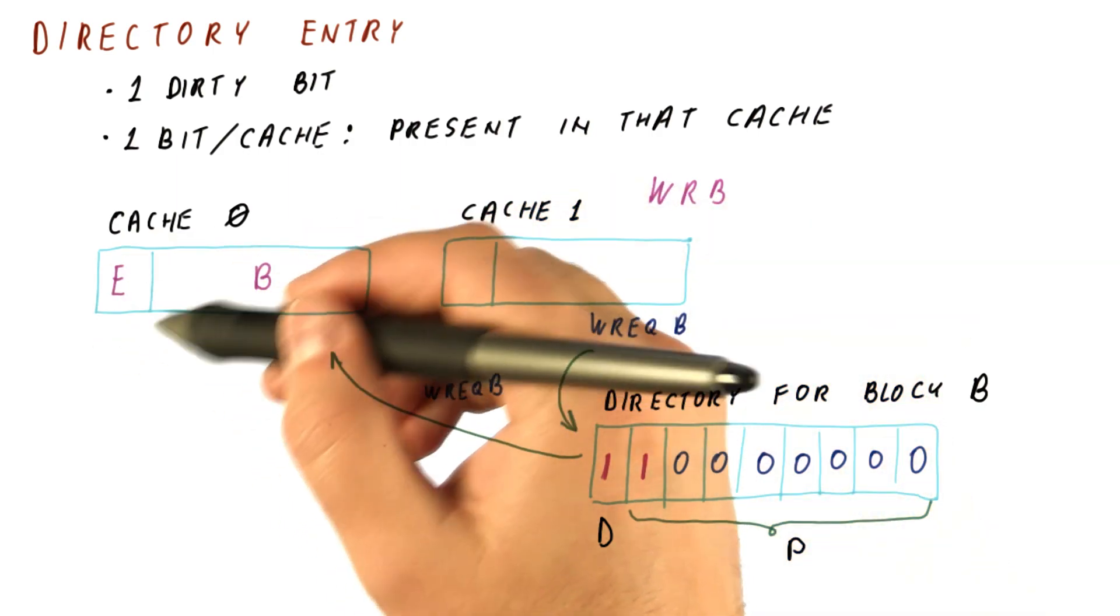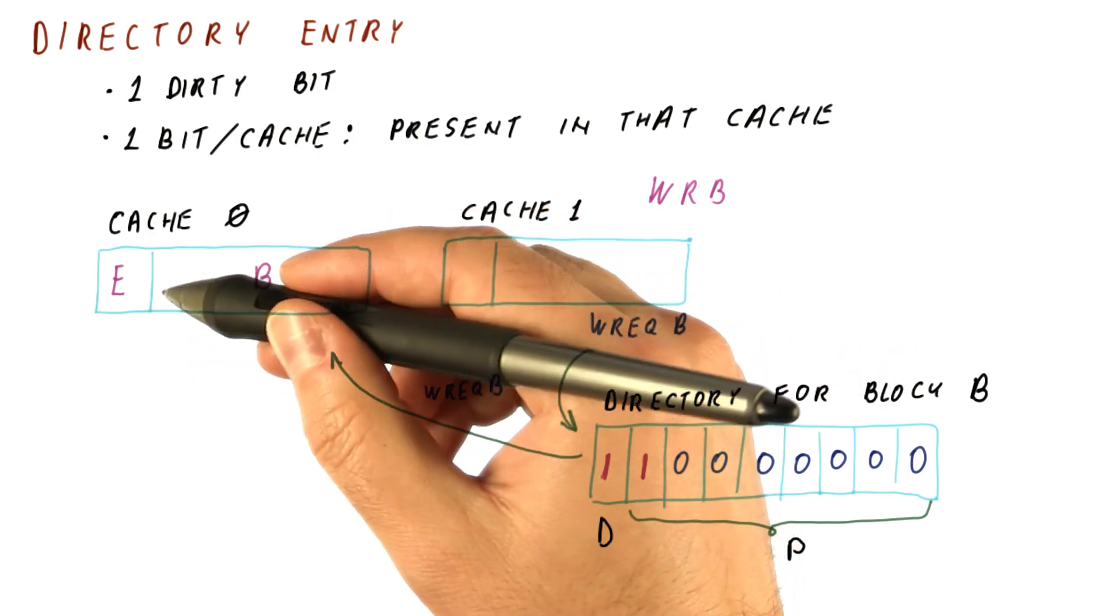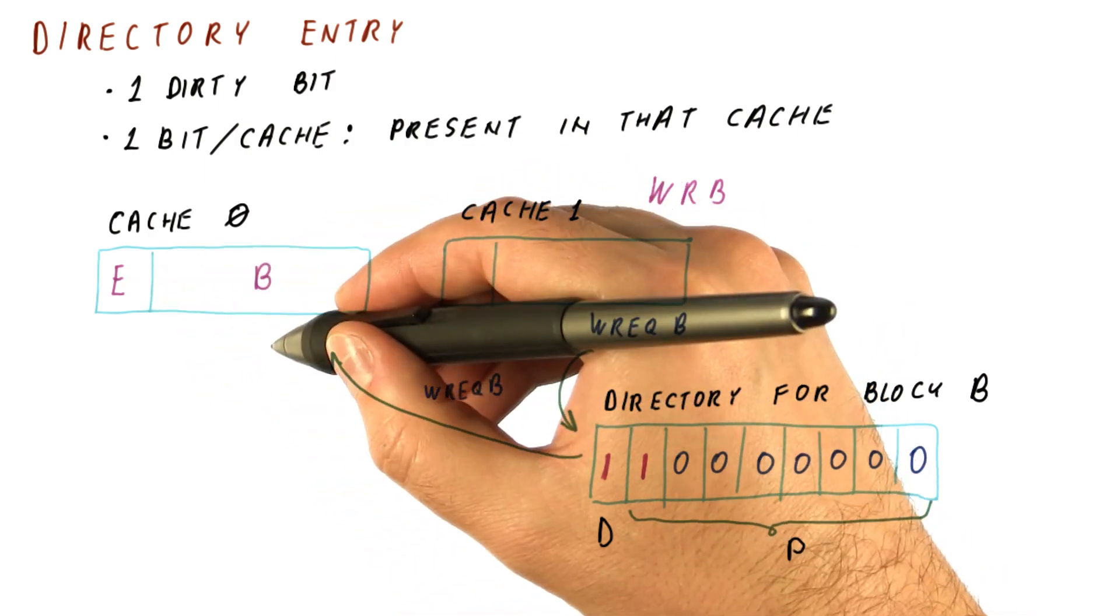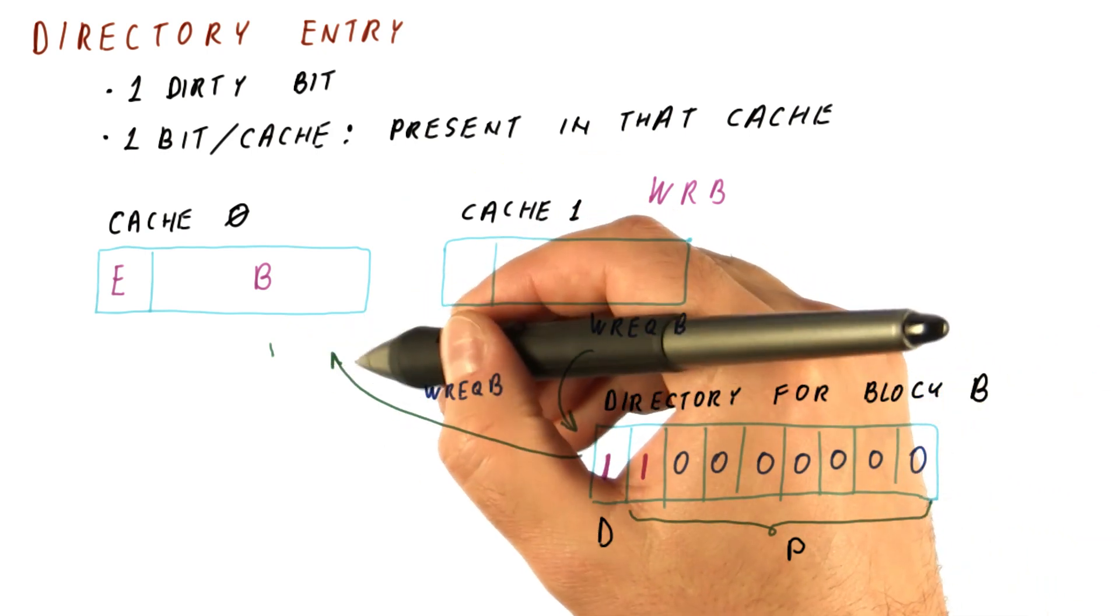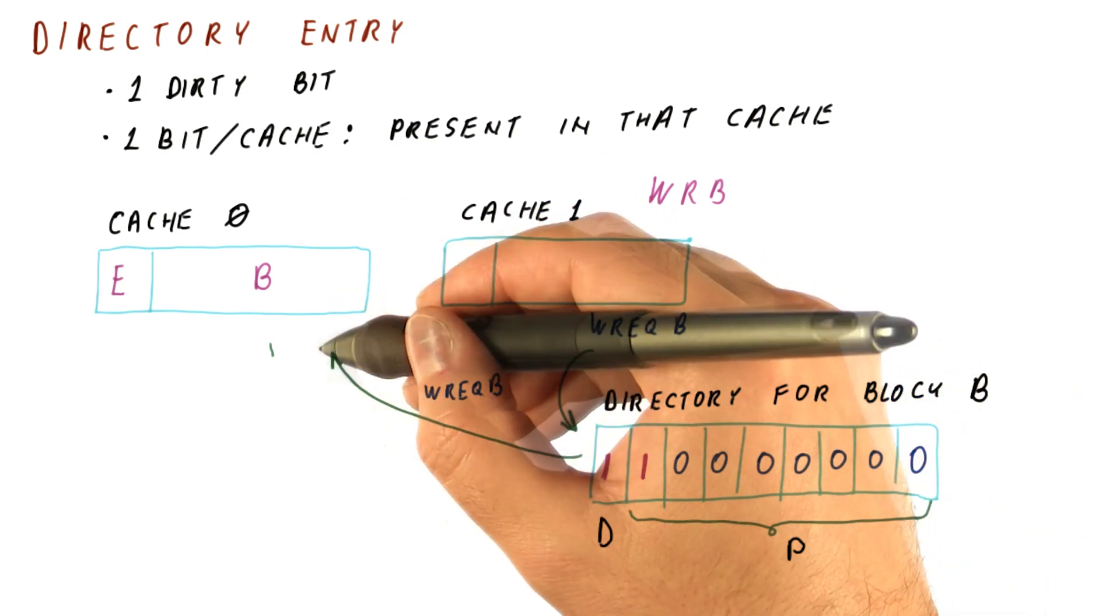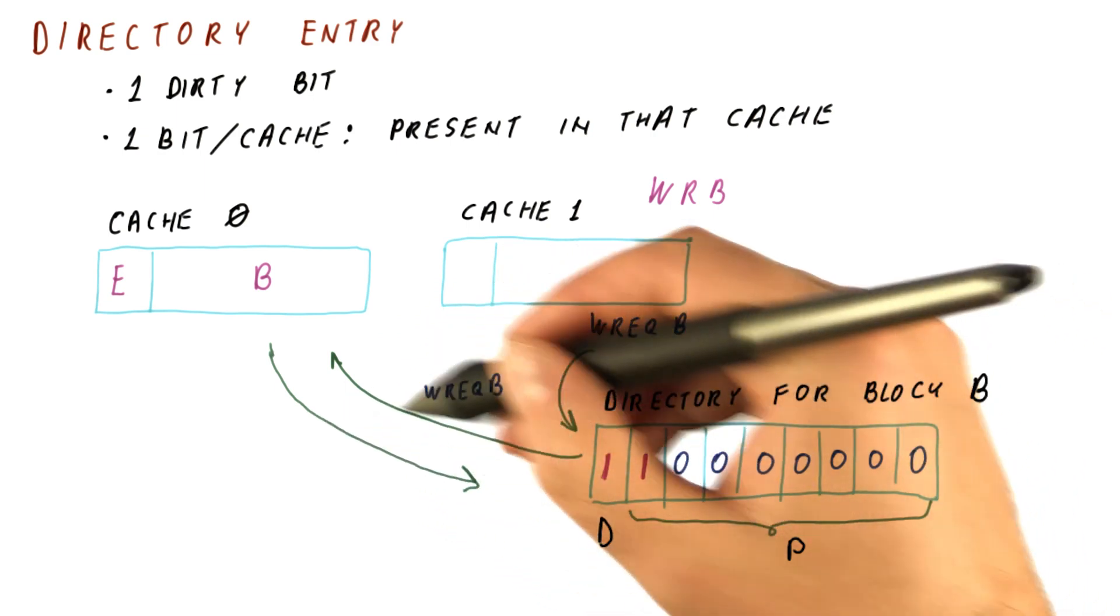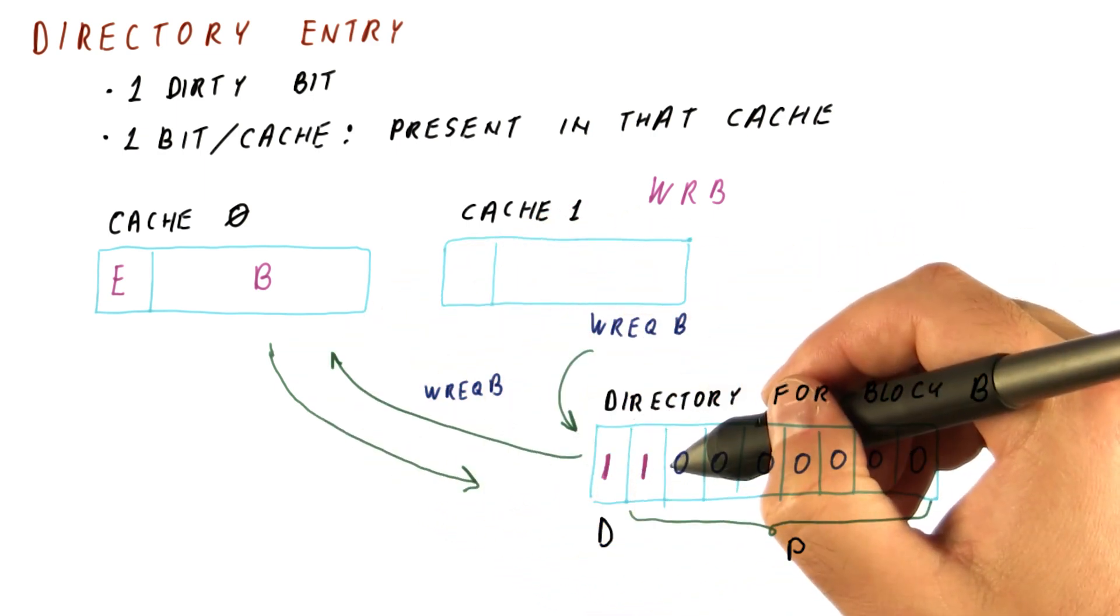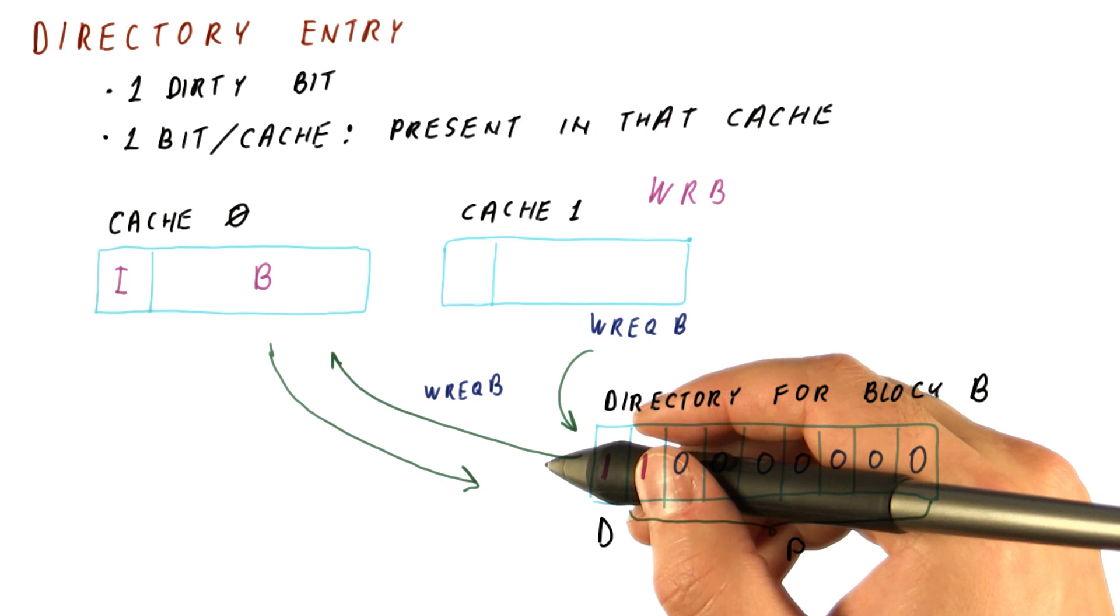And because it has the data in the exclusive state, it can choose to respond with the data, or it may just keep quiet and confirm the invalidation. So what happens here is once the write request has been given to this cache, we need to send the acknowledgement at least, if not the data, back to the directory controller that says that we are done invalidating our copy. So at this point, we have invalidated our copy.